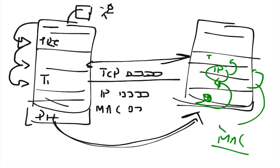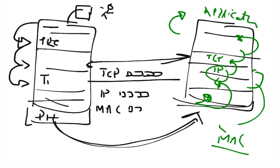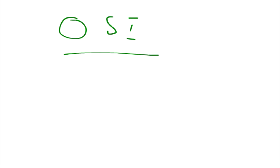The network layer reads the IP address and gives it to the transport layer. The transport layer reads the TCP and gives it to the session layer. The session layer gives it to the presentation layer, which converts the data into the application-readable format and then gives it to the application layer, which is interacting with the user at the receiving end via the application.